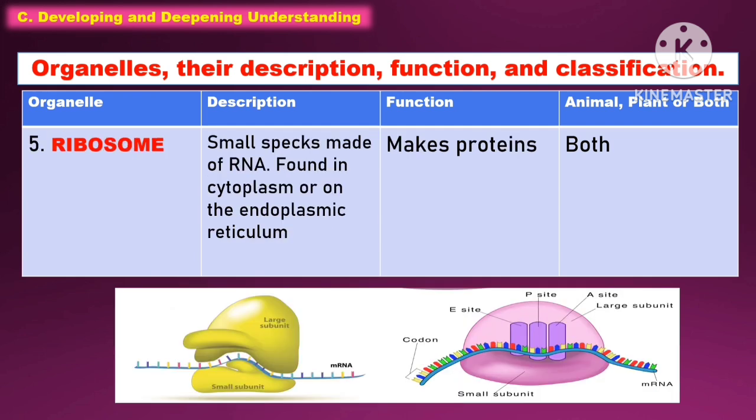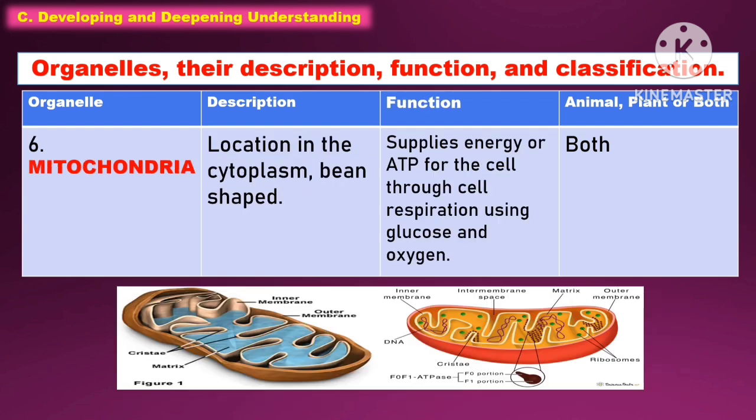Another organelle is the ribosome. It is a small structure made of RNA and it is found in the cytoplasm or on the endoplasmic reticulum. The function of this is to make proteins. It is present in both animal and plant cell.